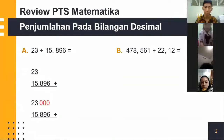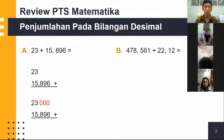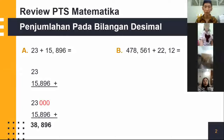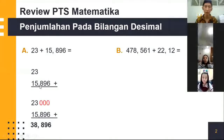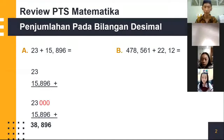Contoh ya: 0 tambah 6, hasilnya 6. 0 tambah 9, hasilnya 9. 0 tambah 8, hasilnya 8. 3 tambah 5 adalah 8. 2 tambah 1 adalah 3. Maka kalau kita susun dan kita jumlahkan, hasilnya adalah 38,896. Ini cara untuk menghitung penjumlahan pada bilangan desimal. Harusnya tidak susah ya anak-anak.